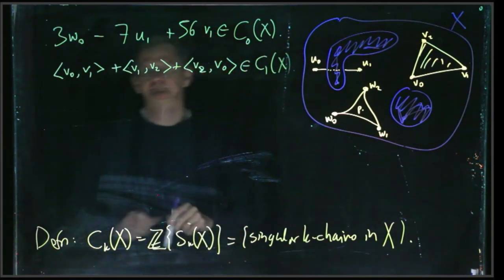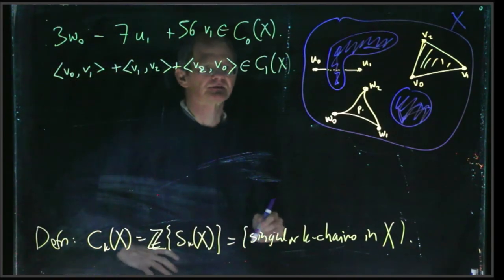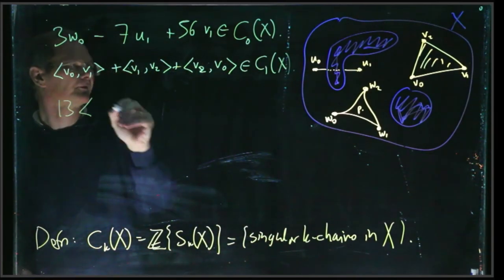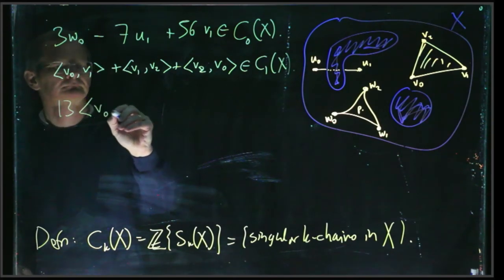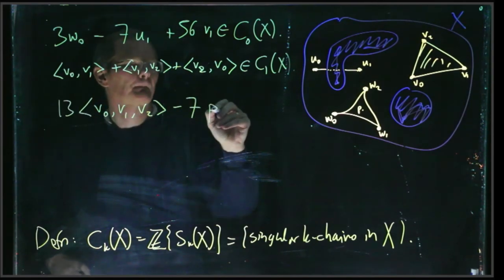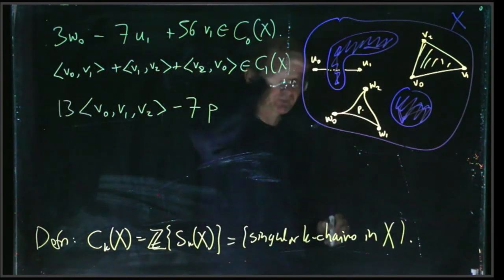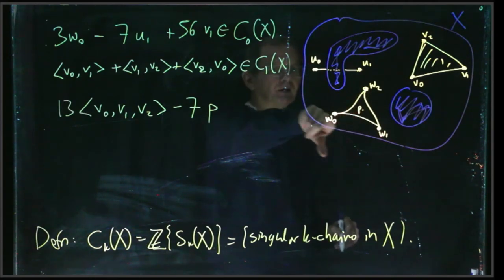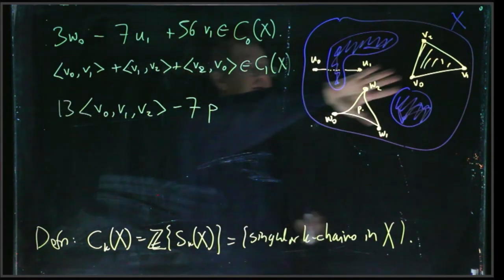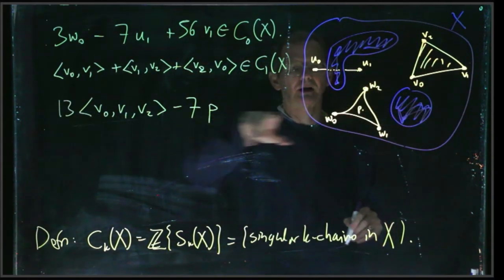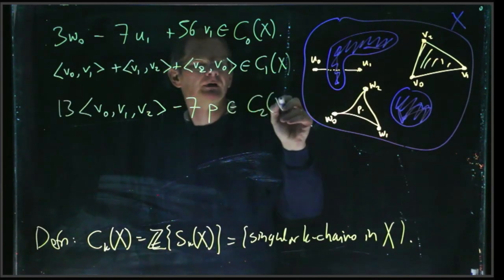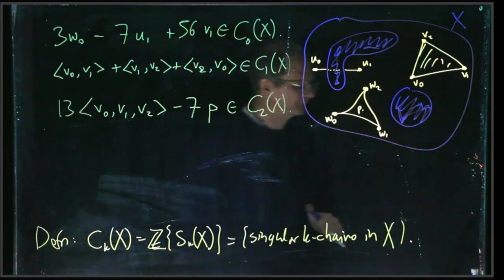And if we want elements of C₂(X), we can have 13 times this linear one, minus 7 times P. So P is this non-linear map from the 2-simplex into X. So here we've got 13 copies of this one, and minus 7 copies of that one. And that counts as an element of C₂(X).